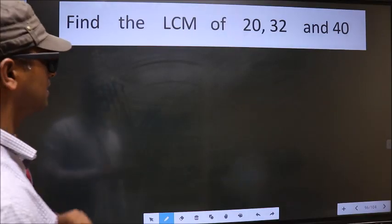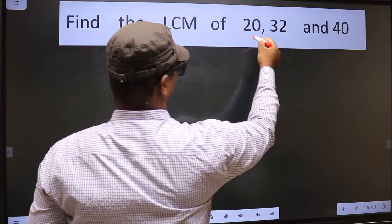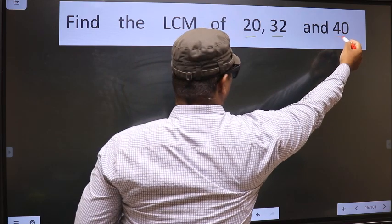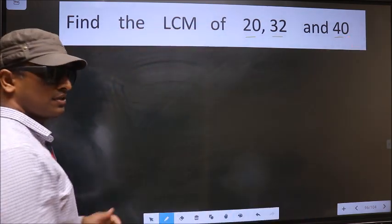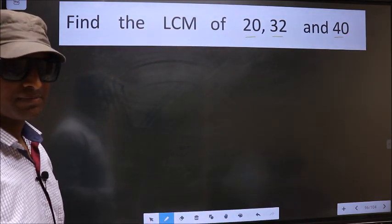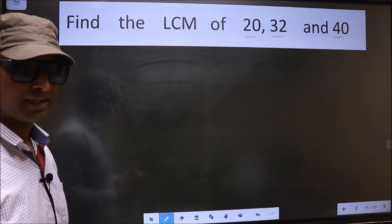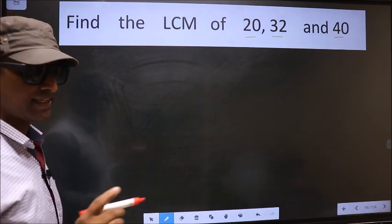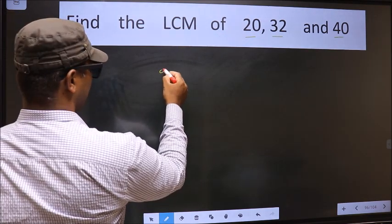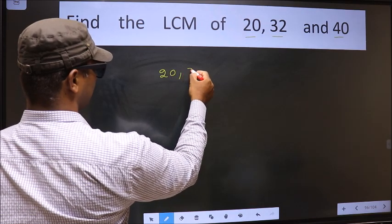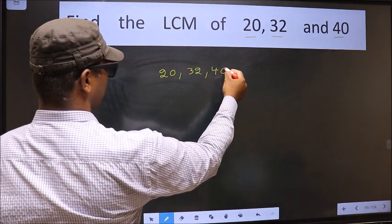Find the LCM of 20, 32, and 40. To find the LCM, first we frame it in this way: 20, 32, 40.